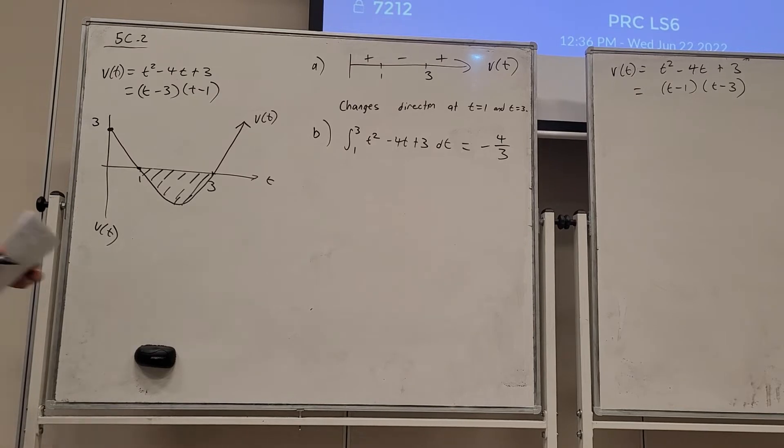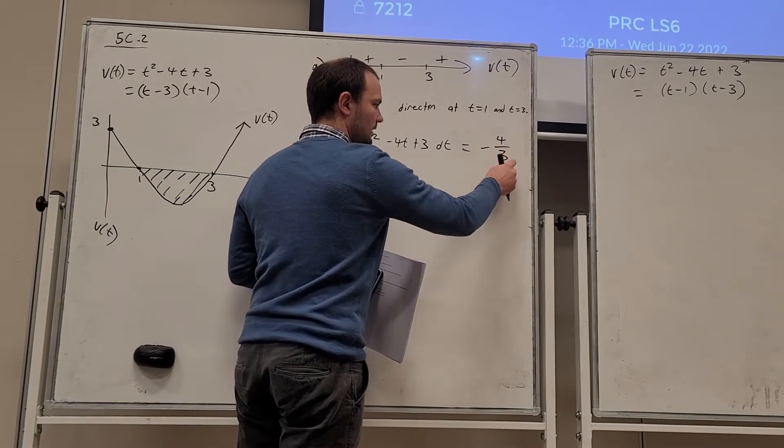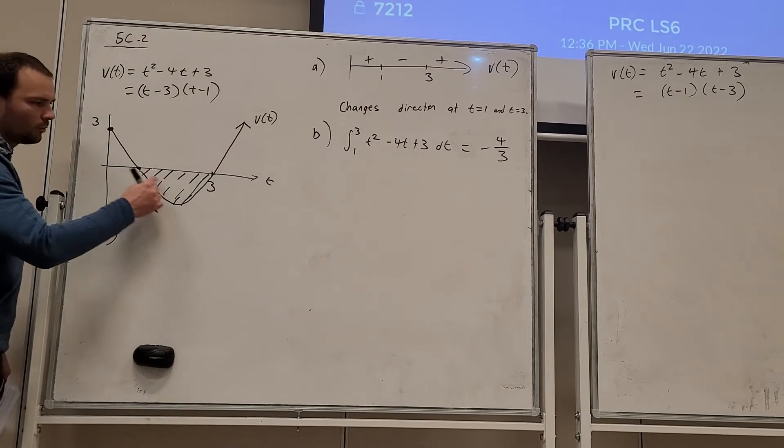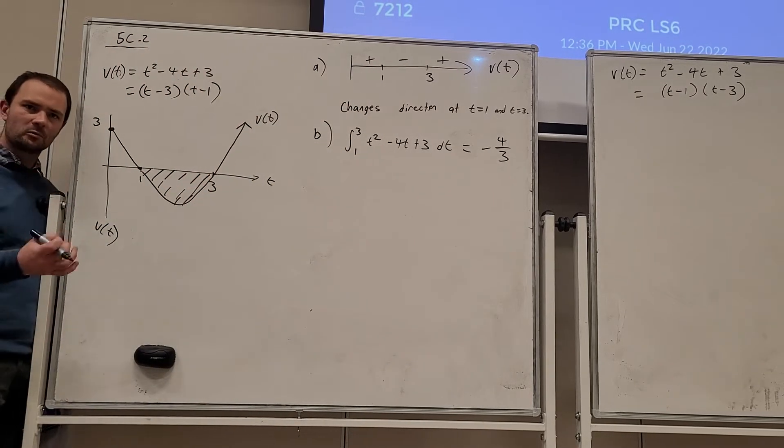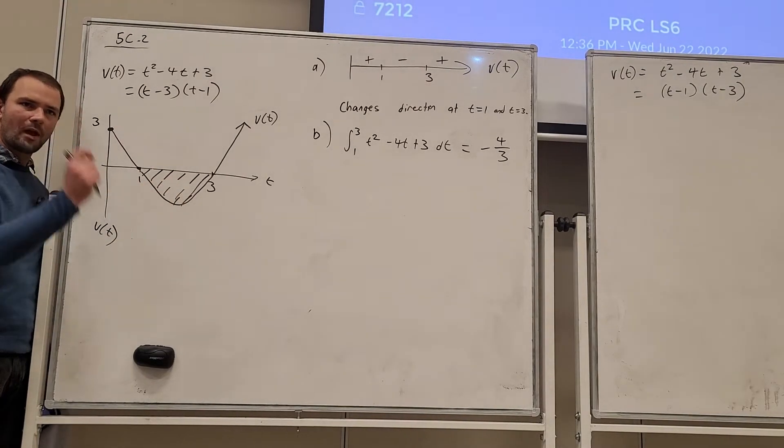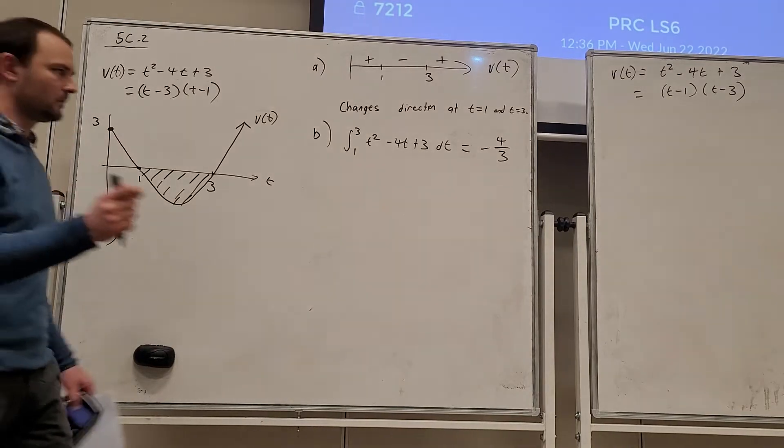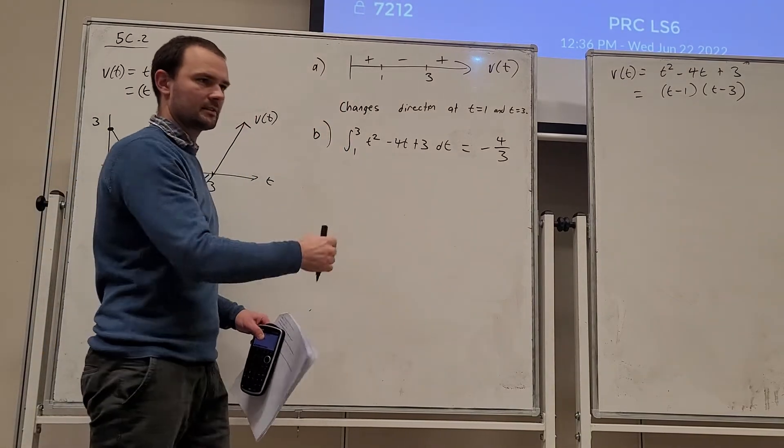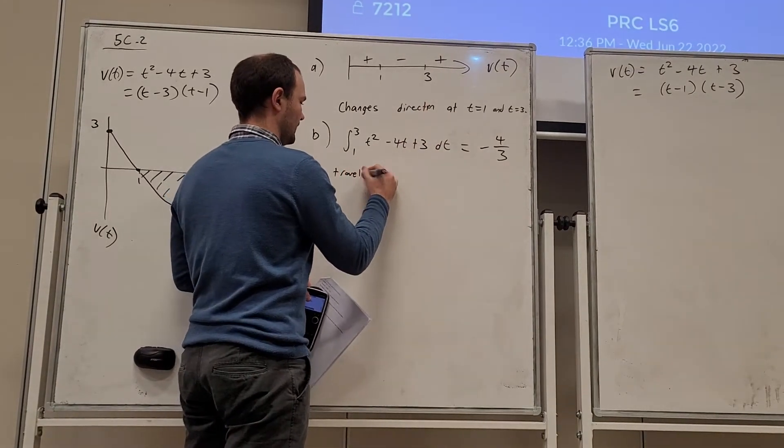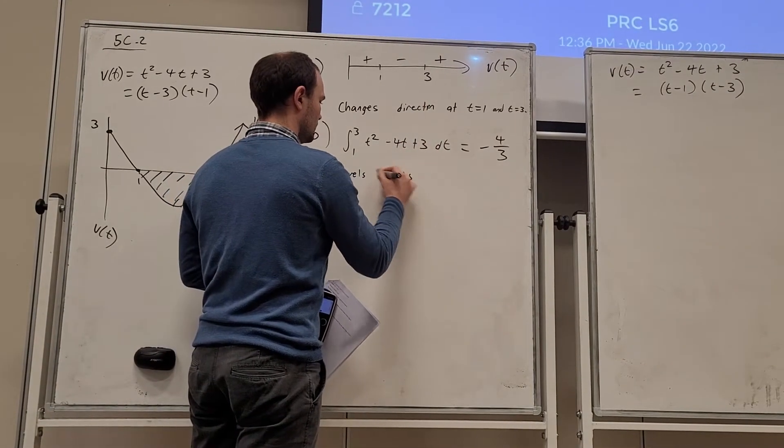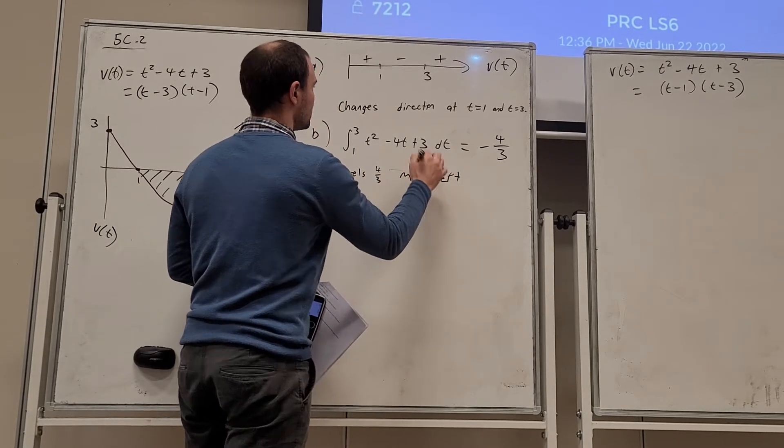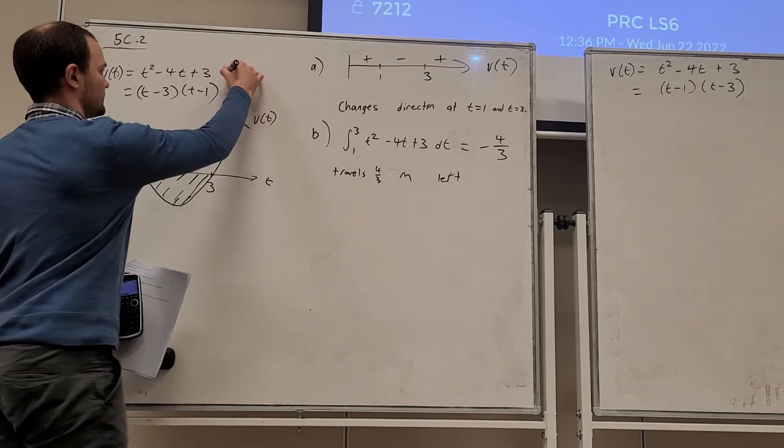So state its significance. Well, 4 on 3, so that's the distance it's travelled between 1 and 3, and it's travelled to the left. Why? Because we have negative velocity when we are below the x-axis. So there's two parts to this: calculate it, and now state its significance. Travels 4/3 units left. I can actually answer that immediately, because our velocity is meters per second.